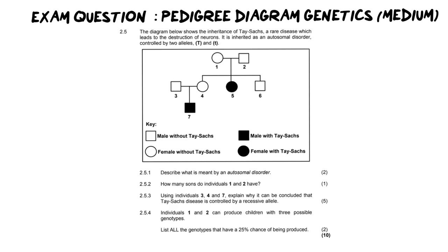This particular question is an unseen genetic problem, which means you might not have heard of the genetic disorder before. The diagram below shows the inheritance of Tay-Sachs, a rare disease which leads to the destruction of neurons. It is inherited as an autosomal disorder, and it is controlled by two alleles, a capital T and a lowercase t. At the very beginning here, this is some very important information. When we see autosomal, we know that we're going to be using capital letters and lowercase letters on their own.